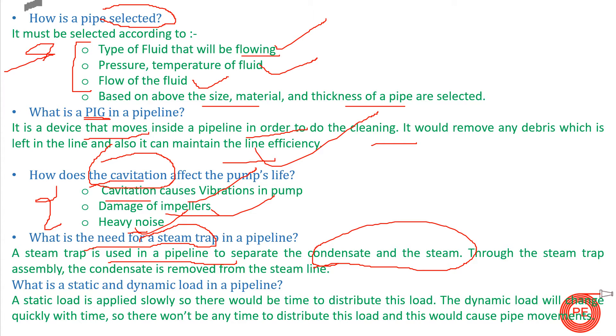What is static and dynamic load in a pipeline? A static load is applied slowly so there would be time to distribute this load. Static means it will not change with time. Dynamic load will change quickly with time so there won't be any time to distribute this load, and it will cause pipe movement. These are the two loadings that we generally take into account while doing analysis in a pipe: static loading and dynamic loading.